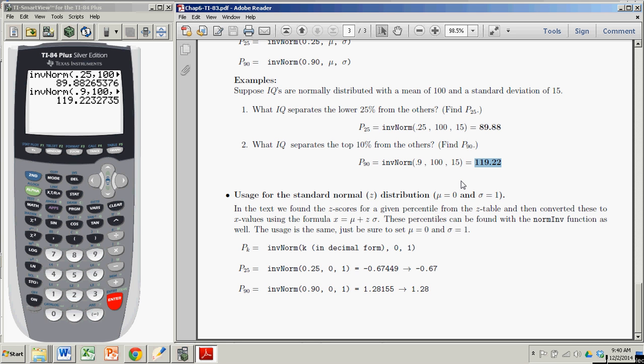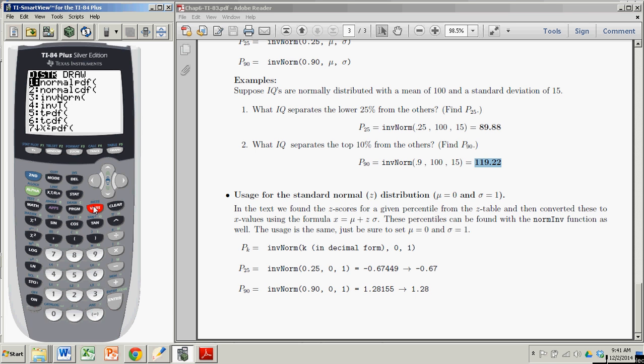So there it is. Getting percentiles from a normal distribution using the TI-83/84, very easy. You just use the inverse norm function found by going to the distribution menu. All right. Very good. Bye.